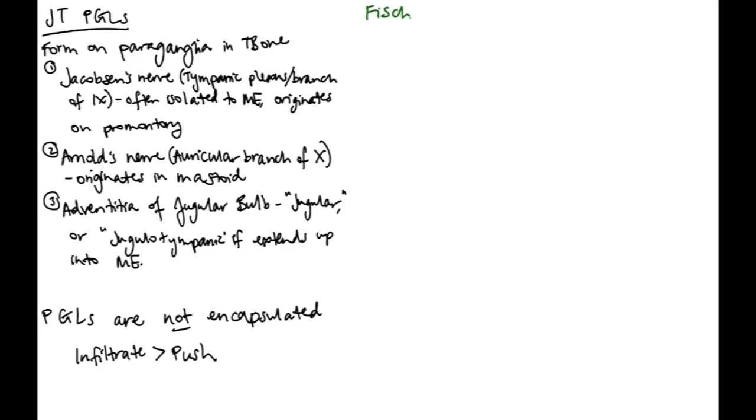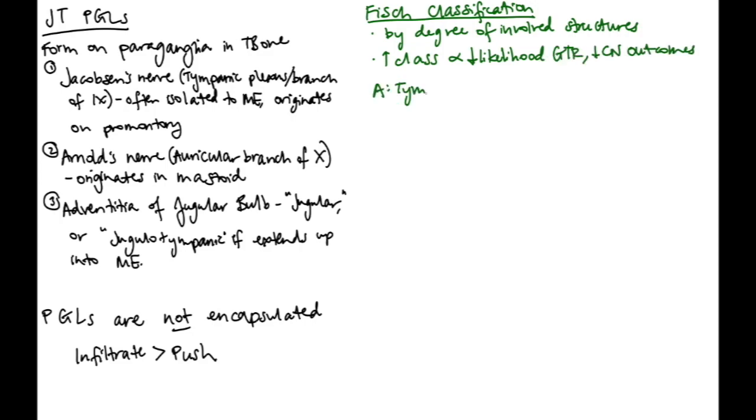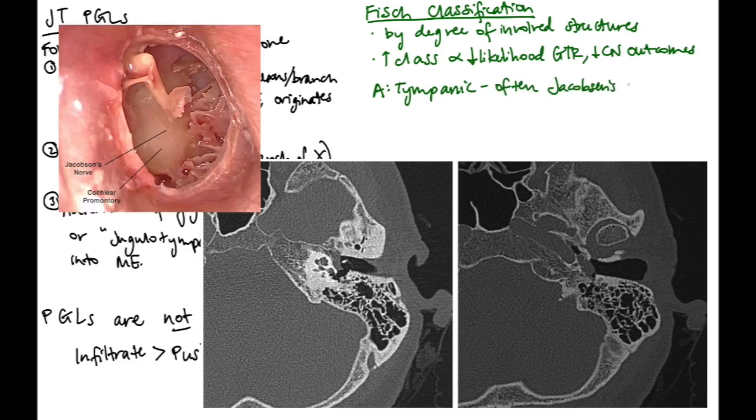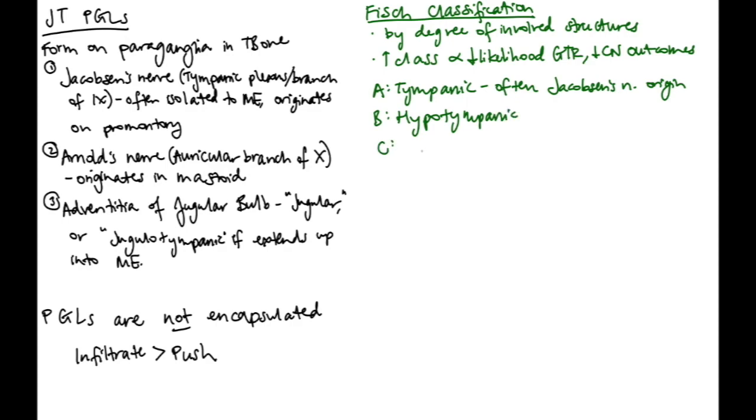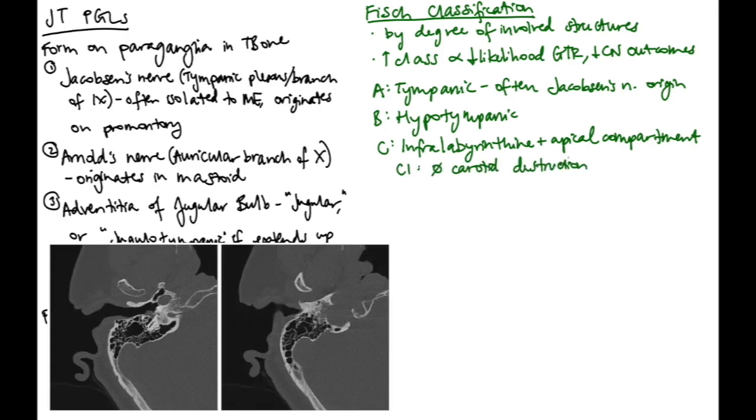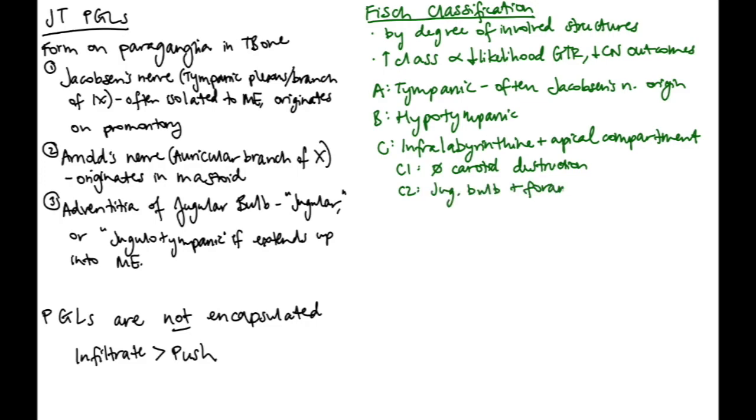There are multiple classification systems for paragangliomas. My mentors and I really like the FISH classification. It classifies paragangliomas by degree of involved structures. And satisfyingly, a higher FISH class is associated with a decreased likelihood of gross total resection and poorer cranial nerve outcomes. FISH class A are the tympanic paragangliomas. These are often Jacobson's nerve origin. FISH class B are considered hypotympanic or involve the hypotympanum. Class C are infralabyrinthine and apical compartments that are starting to become destroyed.